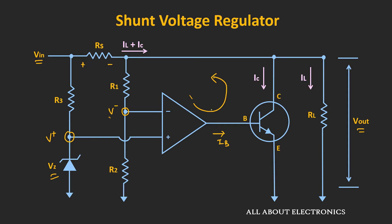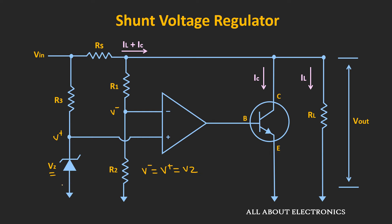A similar type of correction is applied whenever the load voltage tries to reduce. In this way, the shunt regulator maintains the output voltage at a fixed level. Due to the negative feedback, V+ equals V-, which equals the reference voltage. This voltage V- can also be written as R2 divided by (R1 plus R2) times Vout. From this we can say that Vout equals Vz times (1 plus R1 divided by R2). By selecting the values of Vz, R1, and R2, we can decide the regulated output voltage.